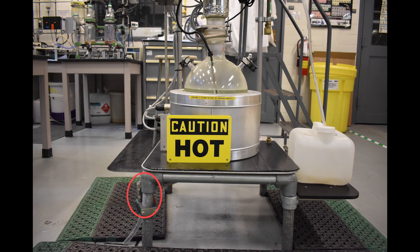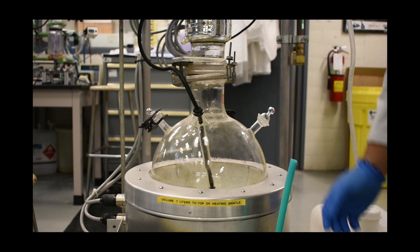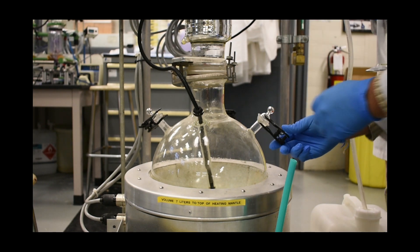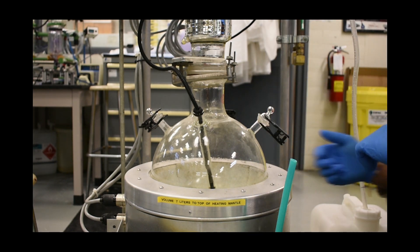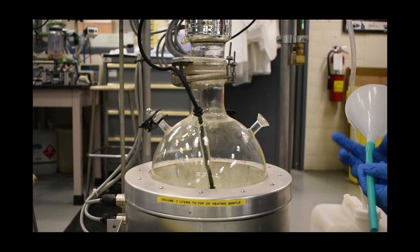Before filling the still, ensure valve 4 below the still is closed to ensure that no solution exits the system. Open the pinch clamp on the still and remove the glass stopper. Take the 8 liters of solution and carefully pour it into the still using a funnel with a tube attached, pouring slowly to prevent spilling over the edge of the funnel. Replace the glass stopper and the clamp and begin.